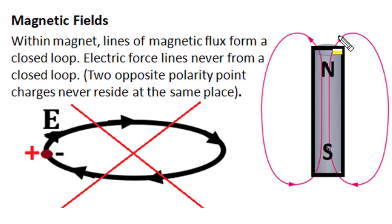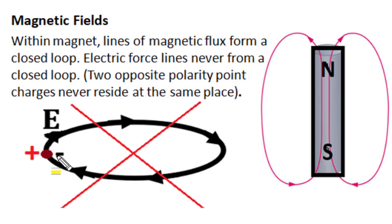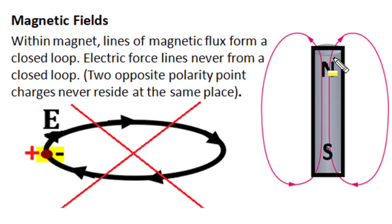Magnetic force lines start from the north pole, end at the south pole, and within the magnet complete their closed loop traveling from south to north. So magnetic force lines always form a closed loop, whereas electric force lines never form a closed loop, as that would mean starting from a positive charge and ending at a negative charge — two different polarity charges cannot coexist at the same position. Magnetic dipole north and south always remain together; you cannot separate them. So magnetic force lines always remain in closed loop formation, while electric force lines never form closed loops.